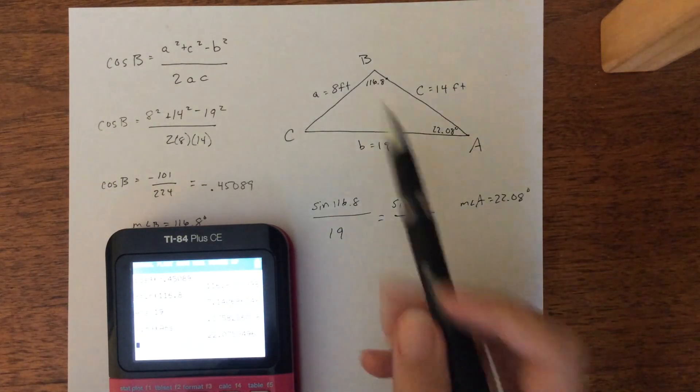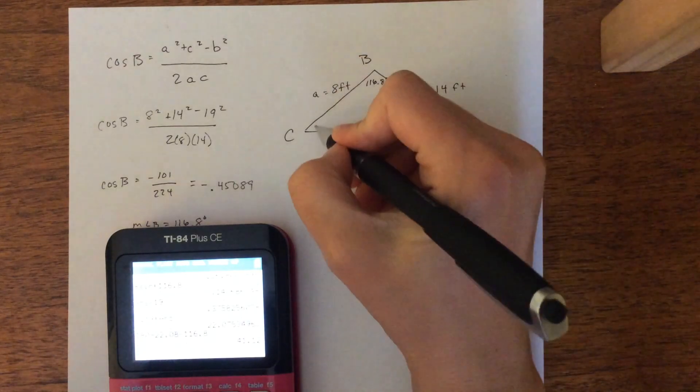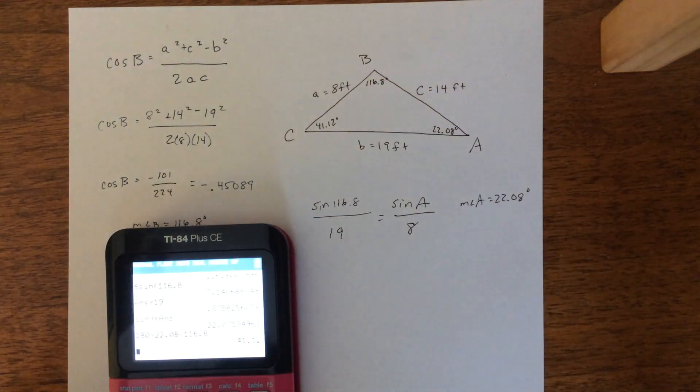And now, because we know it's a triangle, I can just go 180 minus 22.08 minus 116.8 and I get 41.12. And now we've solved all the missing angles and we know all the angles and all the sides of our triangle.